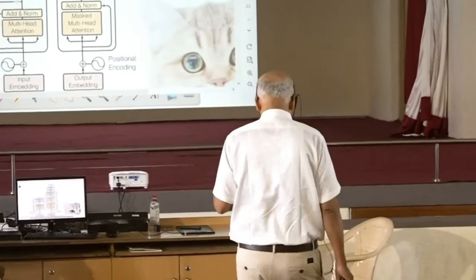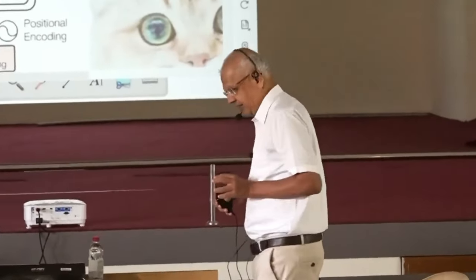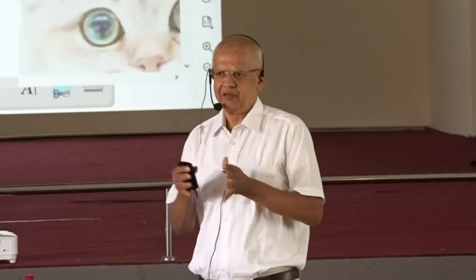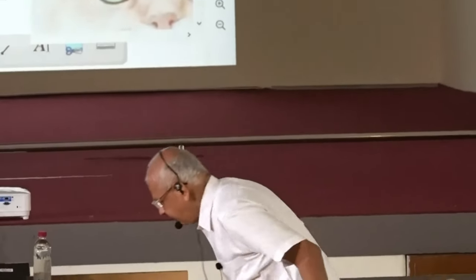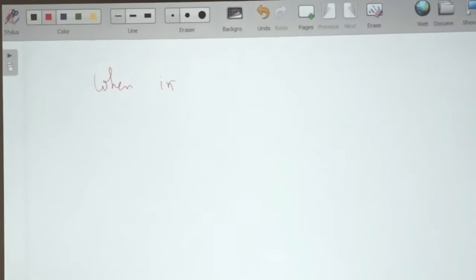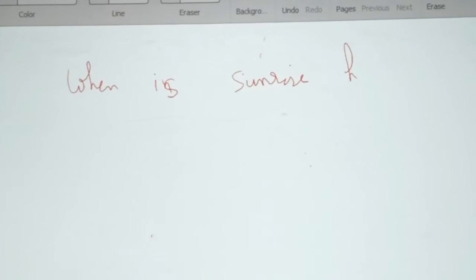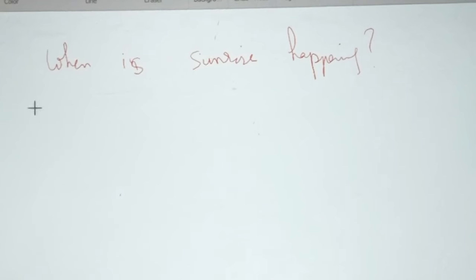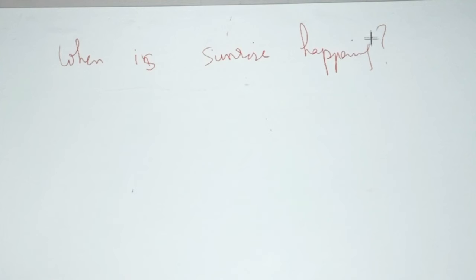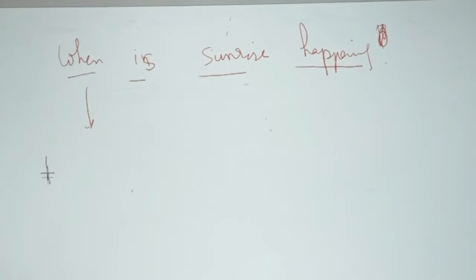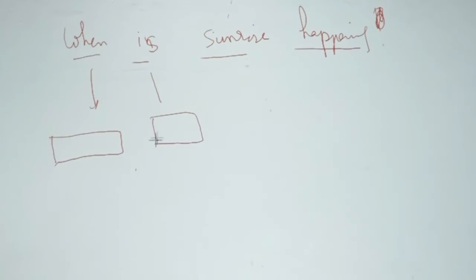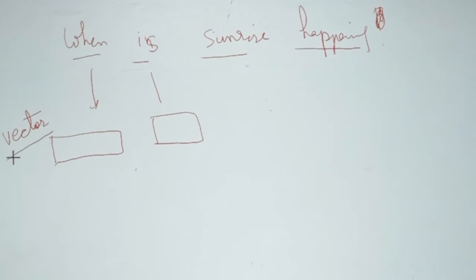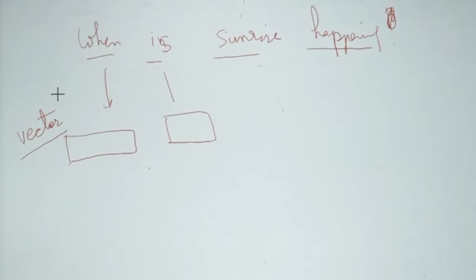Now, how does the input look? The input, whatever be your sentence, is converted into a series of vectors — we call them input vectors. For example, take the sentence 'When is sunrise happening?' There are four or five words. Each word — 'when', 'is', 'sunrise' — is converted into a vector. This is called the first level of vectorization. If you take GPT-3 as a benchmark, this would be a vector of about 12,288 dimensions. That is a pretty big vector.